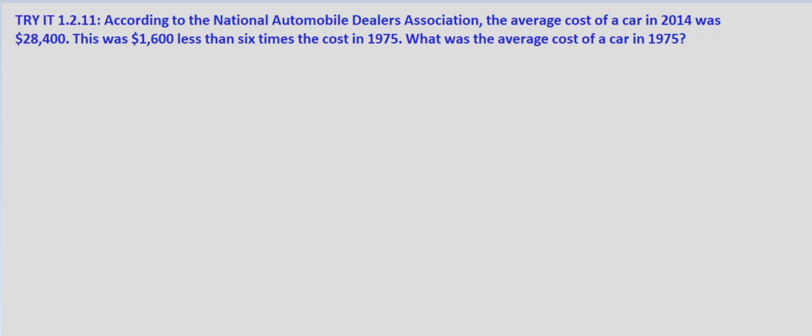So let's go ahead and we will define our cost in 1975 as A for amount. So cost 1975 we will call A.